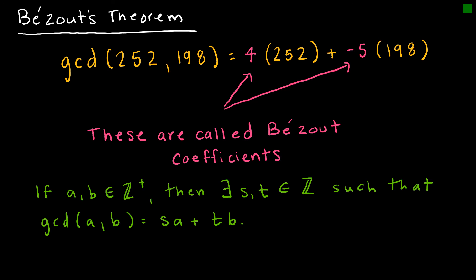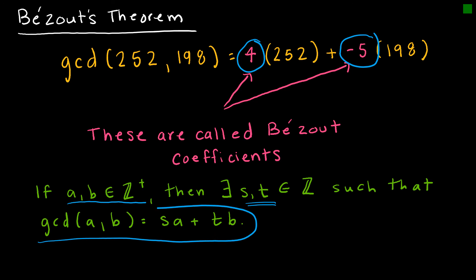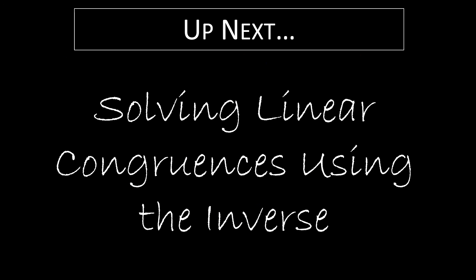We have used the Euclidean algorithm and written our greatest common divisor as a linear combination. Bezout's theorem says that if A and B are positive integers, then there exist integers S and T such that we can write the greatest common divisor as S·A plus T·B. What we have done is the work to find those coefficients — in this case, 4 and negative 5. Coming up next, we are going to solve linear congruences using the inverse.